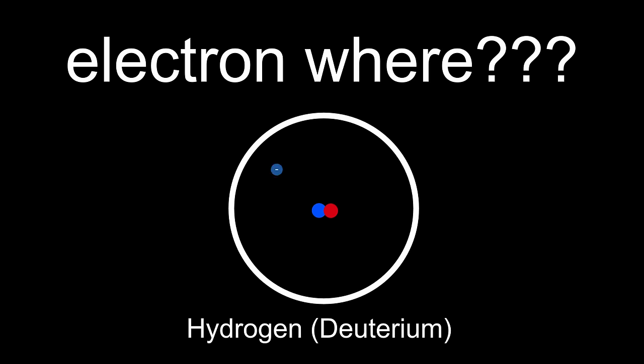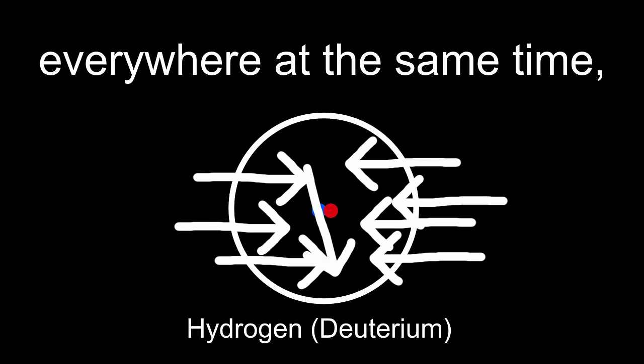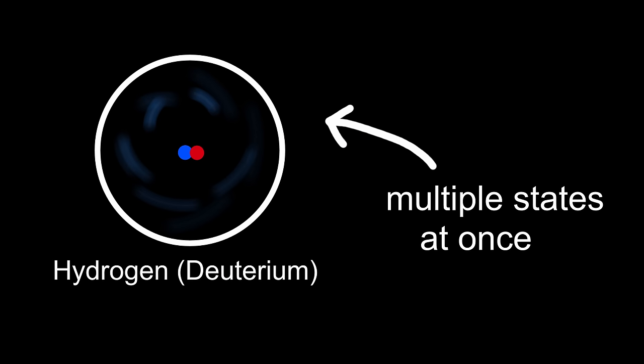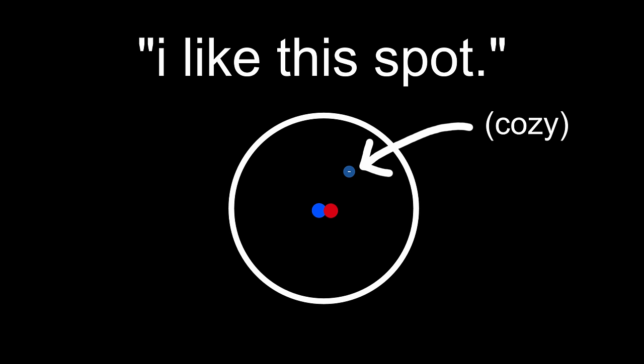Want to know where an electron is inside an atom? It's here. And there. And everywhere at the same time, actually. That's a superposition. It's not in one state, it's in multiple states at once. At least until you measure it. Then it chooses one cozy spot to be in.